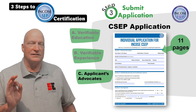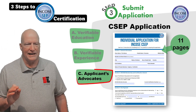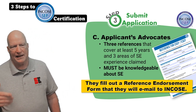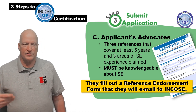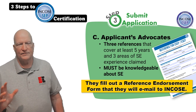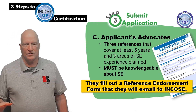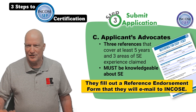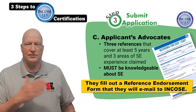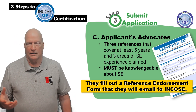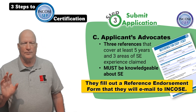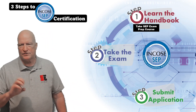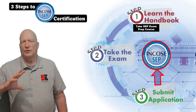The other thing you have to look at is what they call applicant advocates, or references. You have to choose three references who can cover five years of those three areas you claim. They need to be knowledgeable of system engineering — when they fill out the reference endorsement form, they actually have to explain how they are system engineers themselves. If they're already certified, that's even better. Once they're done filling out the form, they email it to ENCOSI. Once you have all those aspects of the submission done, you are done — you will get your CSEP.